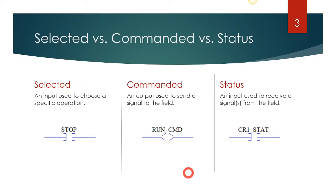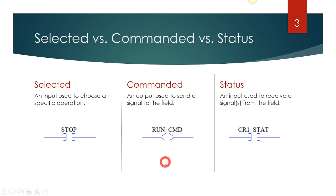A commanded output takes into account multiple items. For example, if the E-stop is not pressed, the stop is not pressed, but the forward button is pressed, then we're going to send a command out to start the motor. I have these with the address not shown because the address is not as important as what it represents. This would typically be a binary — a run command that we would use later in the program to drive a control relay, or it could literally be a control relay itself.